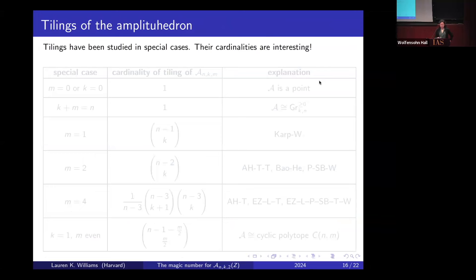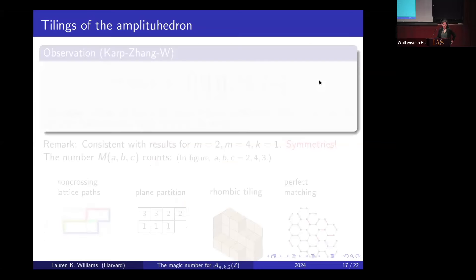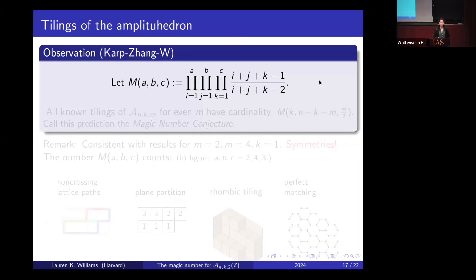Some years ago, with Stephen Carp and Yan Zhuang, we looked at the numerology of these tilings. When m equals 1, the cardinality of a tiling is binomial(n-1, k); when m equals 2, it's binomial(n-2, k); when m equals 4, you get the Narayana number (1/(n-3)) * binomial(n-3, k+1) * binomial(n-3, k); and for even m with k equals 1 you get a binomial coefficient matching the known triangulation size of a cyclic polytope.